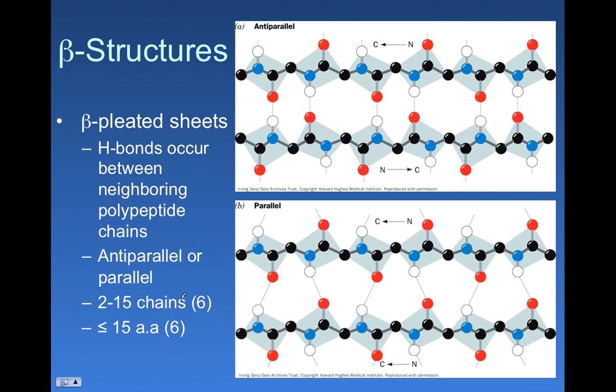These chains, there's a lot of variation in how you make these sheets. Usually, a chain is less than 15 amino acids, and a particular sheet can have 2 to 15 chains. These numbers in parentheses are about the average. There's a lot of variation in how these sheets are composed. So we'll look at some of these sheets in class and hopefully get a better sense of what they look like.